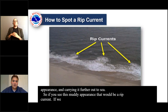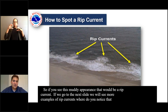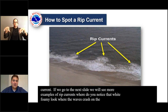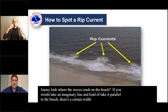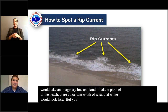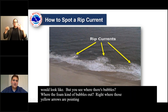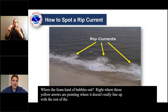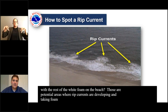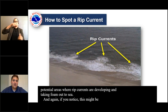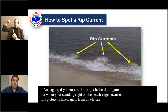Here are more examples of rip currents. Notice that white foamy look where waves crash on the beach. If you take an imaginary line parallel to the beach, there's a certain width of white foam. But where the arrows are pointing, you'll see foam bubbling out, not lining up with the rest of the white foam on the beach — those are potential areas where rip currents are developing and taking foam out to sea. Again, this might be hard to figure out when you're standing right on the beach edge because this picture is taken from an elevated area looking down on the water, where it's a lot more noticeable.